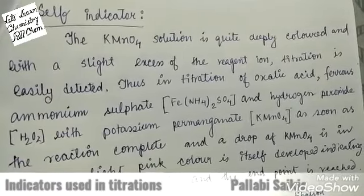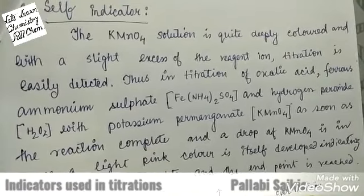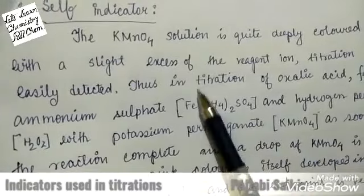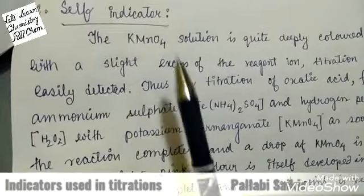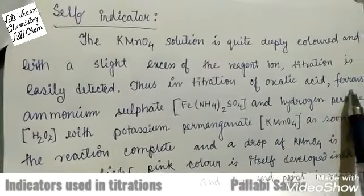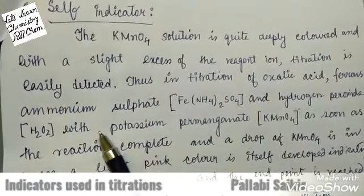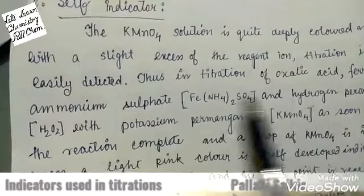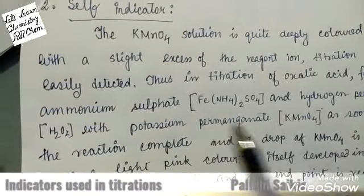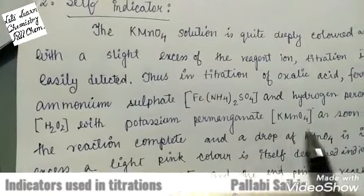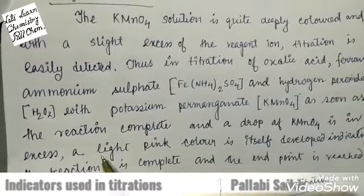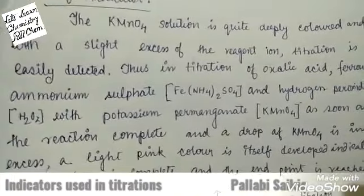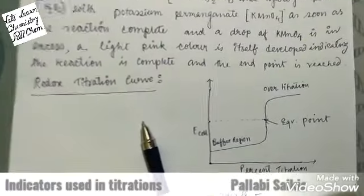Next is the self indicator. One example is potassium permanganate (KMnO₄). KMnO₄ is a colored solution and with a slight excess of the reagent, the end of the titration can be easily detected. Thus in the titration of oxalic acid, ferrous ammonium sulfate, and hydrogen peroxide with potassium permanganate — a redox reaction with KMnO₄ as the oxidizing agent — KMnO₄ acts as a self indicator. After completion of the reaction, a single drop of excess KMnO₄ develops a light pink color, indicating the completion of the reaction.